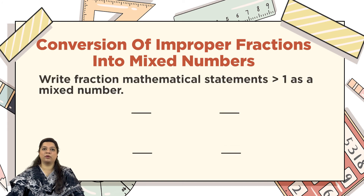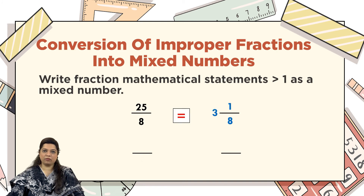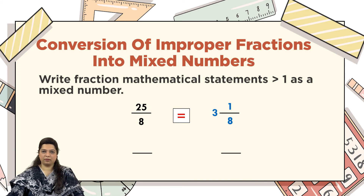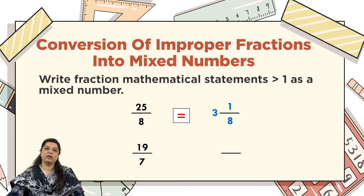Remember, an improper fraction will always be equal to or greater than 1. Let's prove this with examples. 25 upon 8: 8 times 3 is 24, remainder is 1. So the result is 3 whole number 1 upon 8 — the remainder 1 is your numerator, the quotient 3 is your whole number, and 8 remains your denominator.